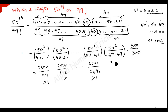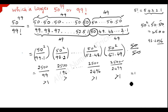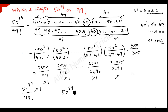In the same way, 50 squared which is 2500 divided by 51 times 49, which equals 2499, is also greater than 1. So all the values are greater than 1. Therefore, 50 to the power 99 over 99 factorial is greater than 1, which implies 50 to the power 99 is greater than 99 factorial. So the largest value is 50 to the power 99.